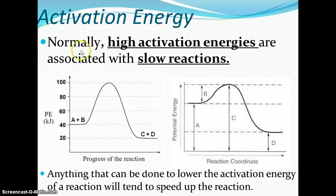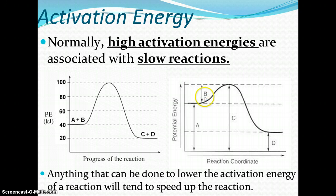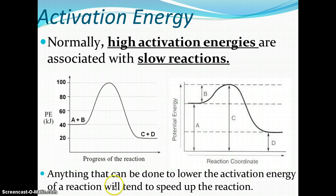High activation energies are associated with slow reactions. On the left side, we have a high hill — a lot of activation energy needed to jumpstart the reaction. On the right side, we have lower activation energy, shown as point B — it's going to take a lot less energy to get the reaction started, making it quicker and easier. Anything that can be done to lower the activation energy will speed up the reaction, because it makes it easier to get over that hill.